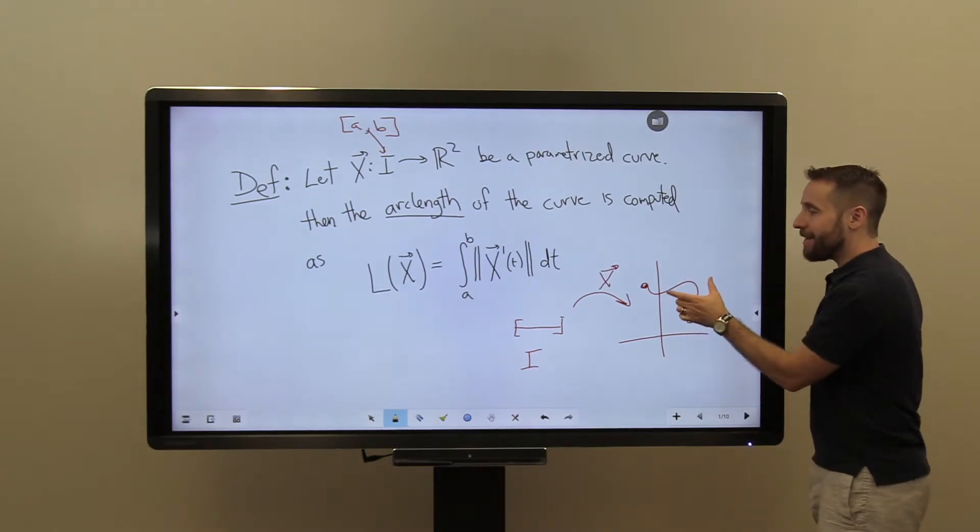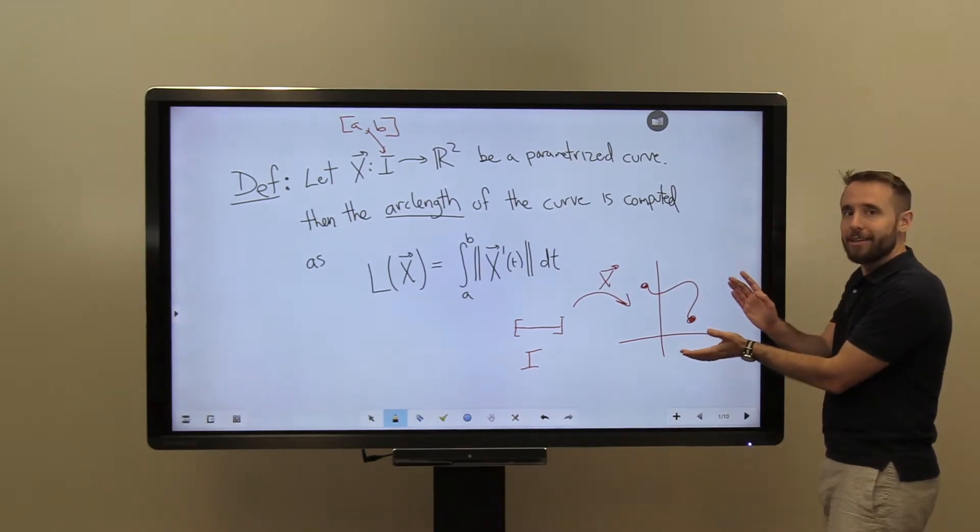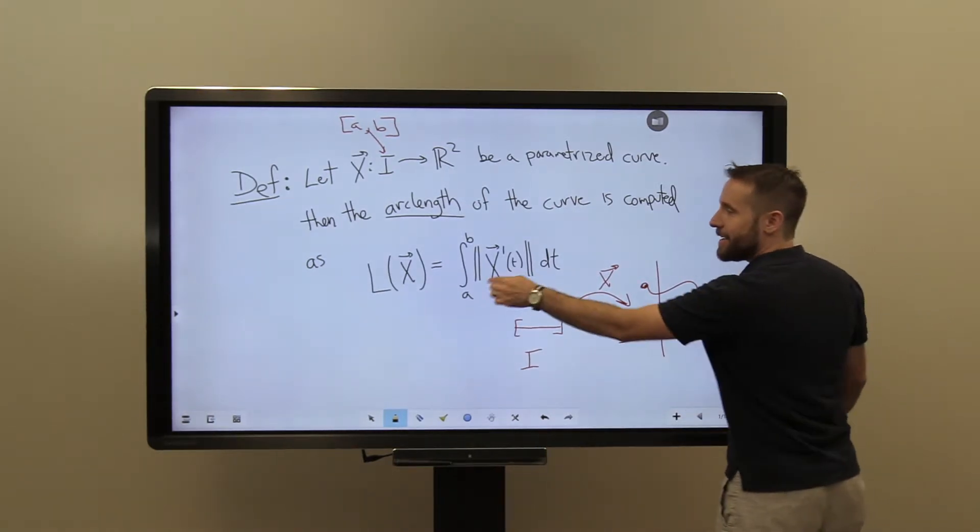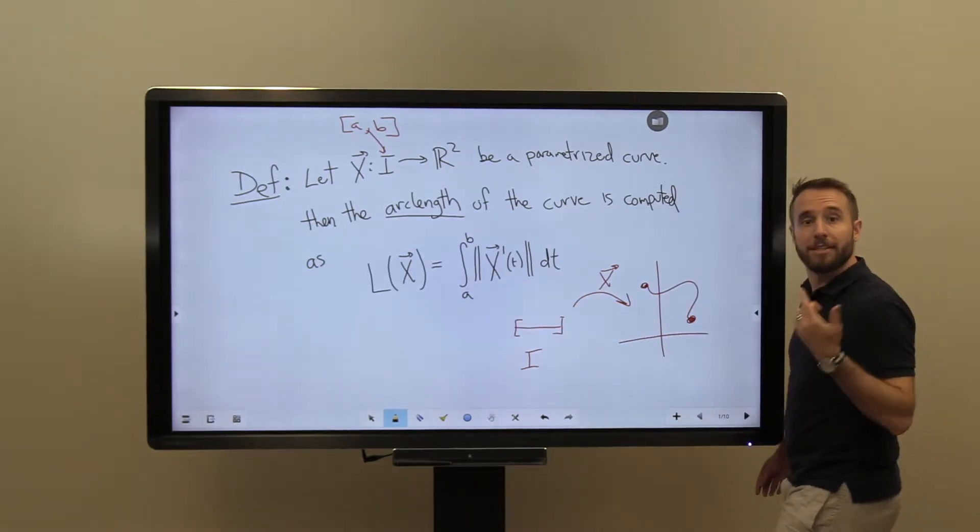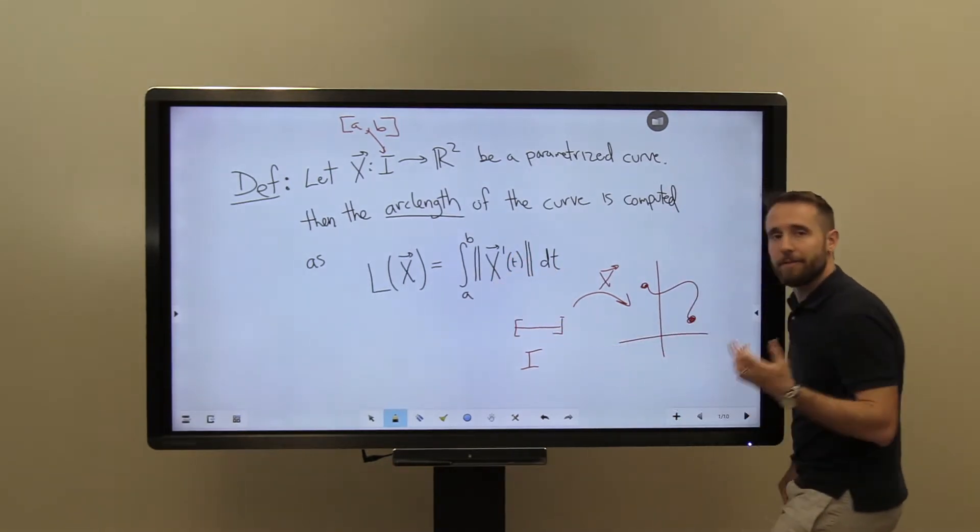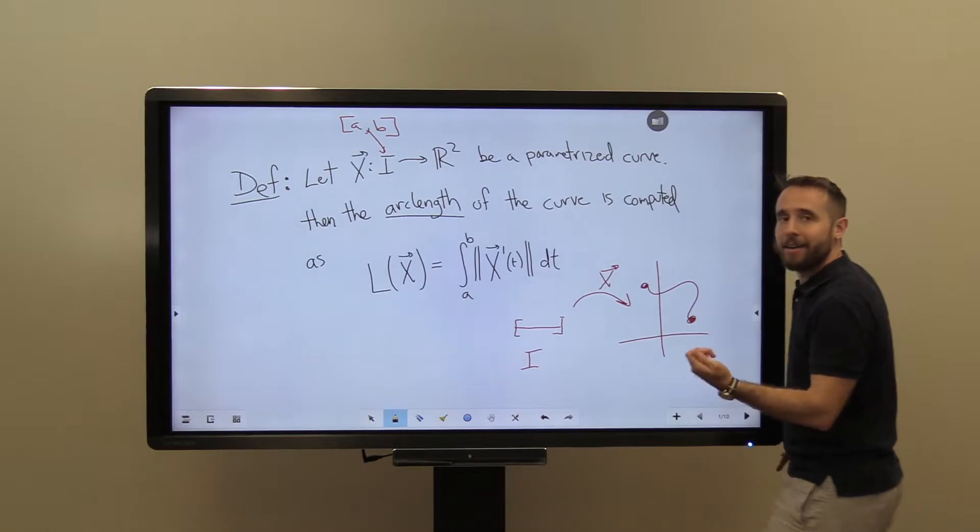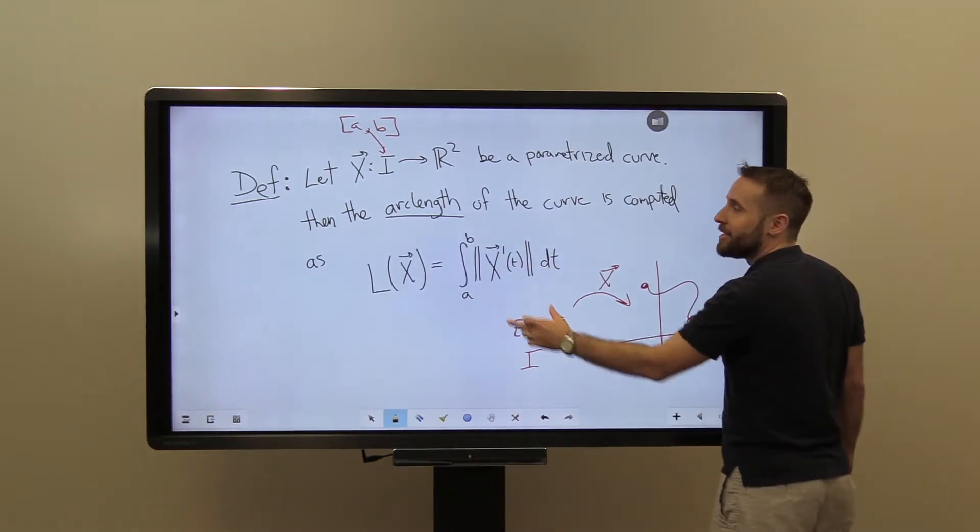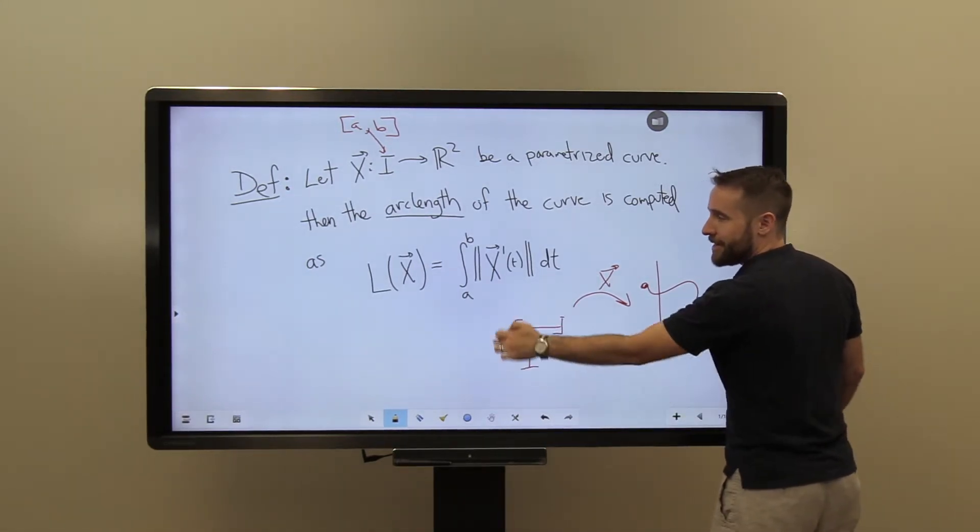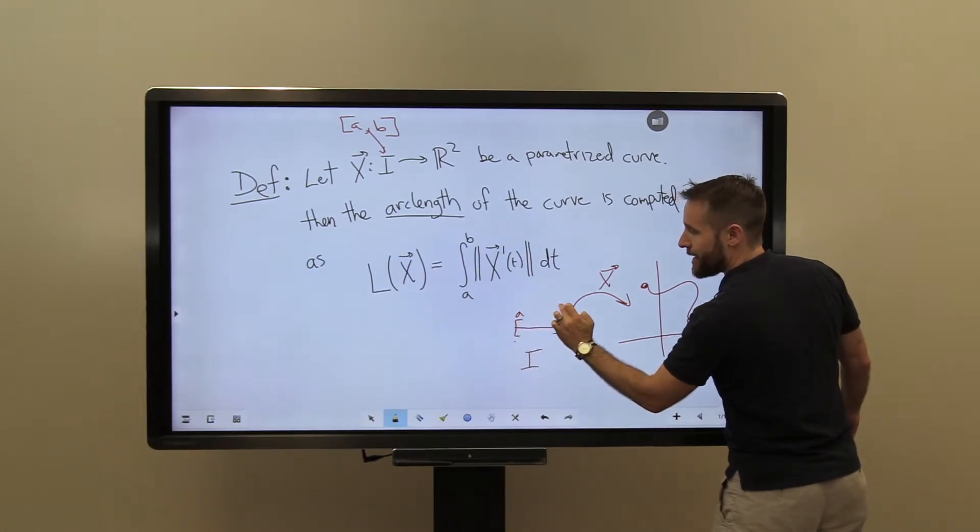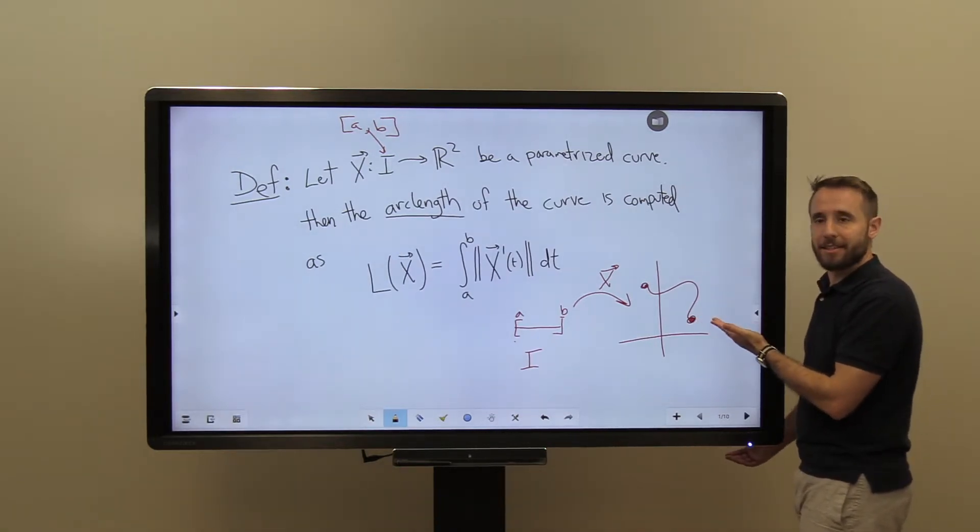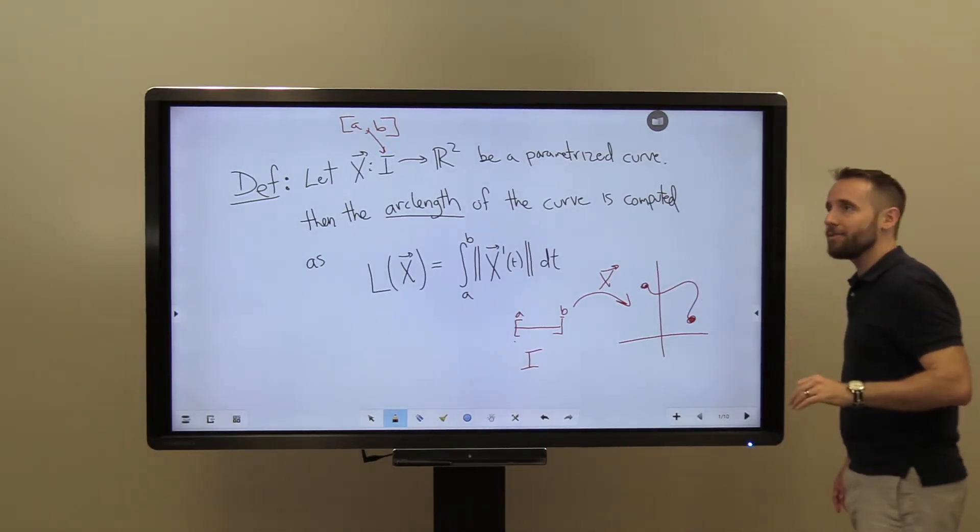So to compute the length of this object, this object right here, I'm actually doing all of my computing using the t variable. In fact, this integral that I'm computing is an integral over t, and this quantity, the norm of x prime of t, is just a function of t. For any given t, I can compute what the norm of x prime of t is. So the actual integral I'm computing is taking place with this t variable over this t domain between the endpoints of a and b, even though it's measuring something about this physical locus, this curve over here. So that's kind of interesting.